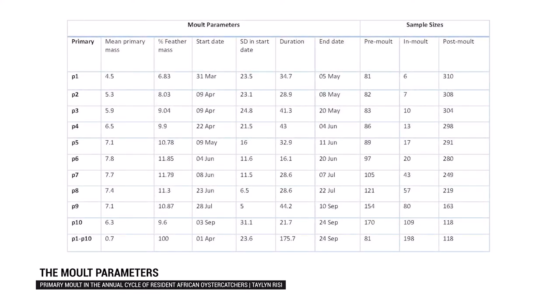This table shows the different aspects of the moult period. Primaries 1–10 and the wing are in the first column, with their corresponding moult parameters in the columns that follow. The sample sizes of records within each stage of moult — pre-moult, in-moult and post-moult — are also mentioned for the 10 primaries and the wing.